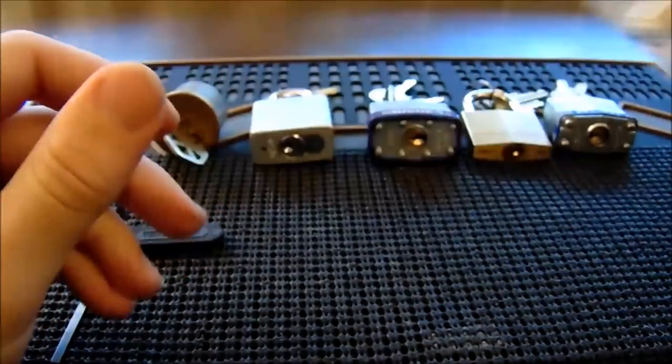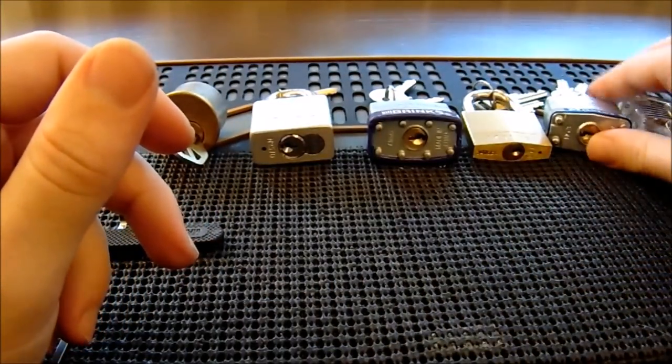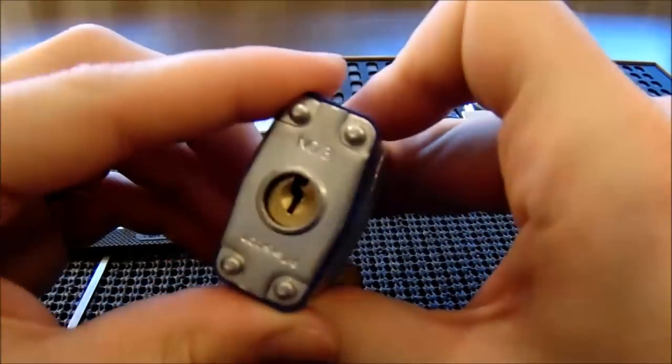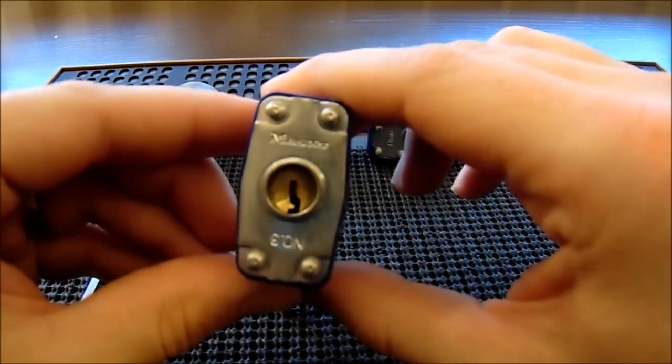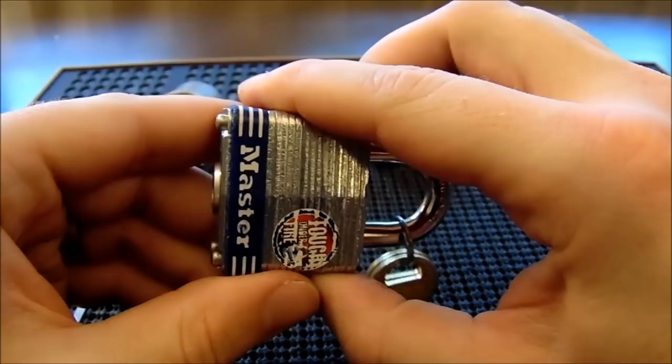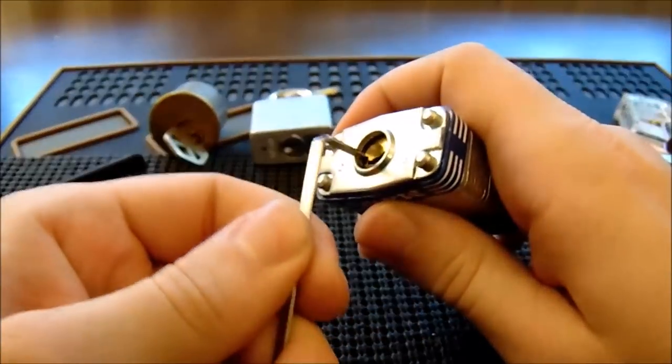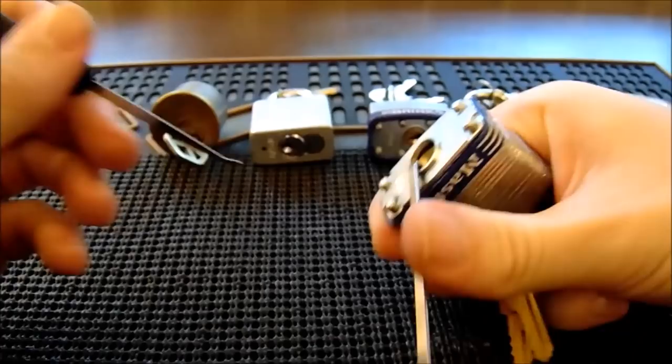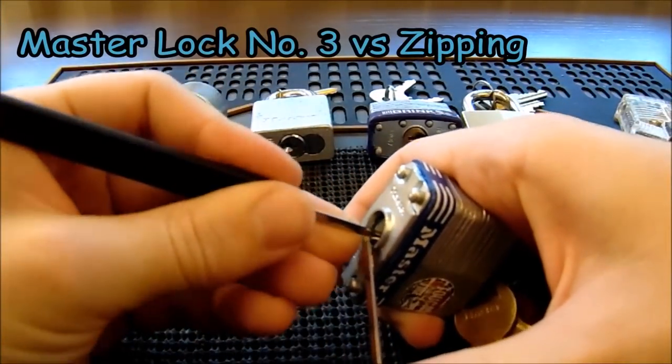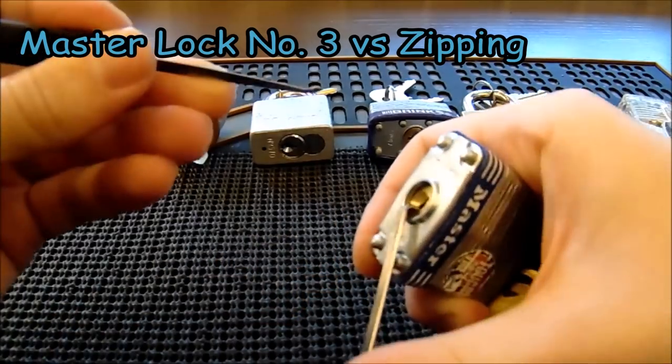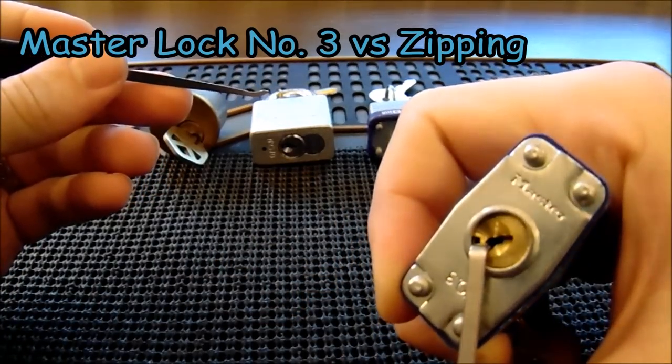So the next lock I'm going to do is the Master Lock model number 3. This is one of the quintessential starter locks for people starting out. This is a four pin lock with all standard pins. I'm going to do light bottom of the keyway tension and I'm going to try to zip it open right now. So we're just going to put the hook right in the back of the lock and see what happens, and it just opened up.